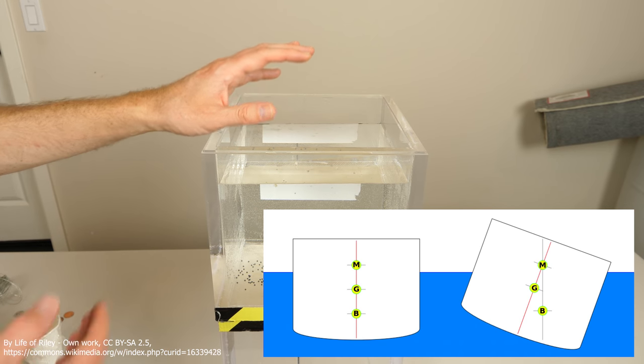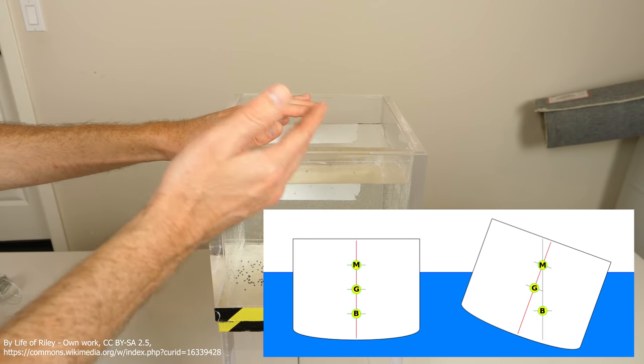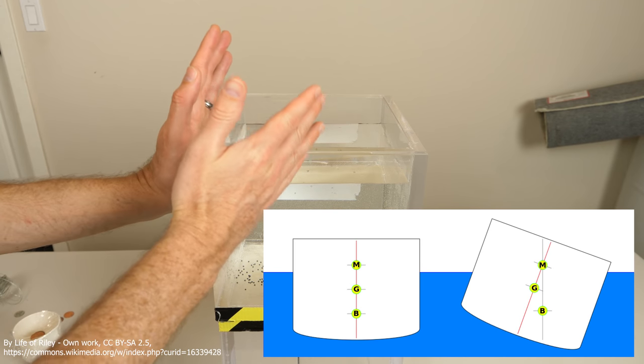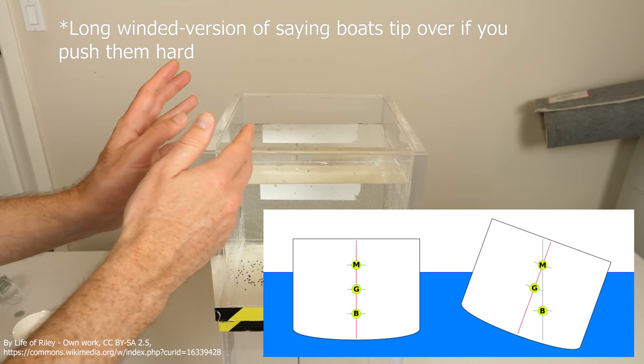So in that way, when the center of mass, even though it's above the center of buoyancy, it can still stay stable. But that's only possible for a certain angle. Once you get past a certain angle, then it will tip over.